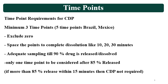What are the time points requirements or generalized guidelines for the time points for making the CDP? When you calculate the similarity factor or dissimilarity factor like F1, F2, minimum 3 points are required. For Brazil and Mexico, generally 5 time point data is required. In this comparison, the 0 time point is not considered — it is excluded from the CDP study.